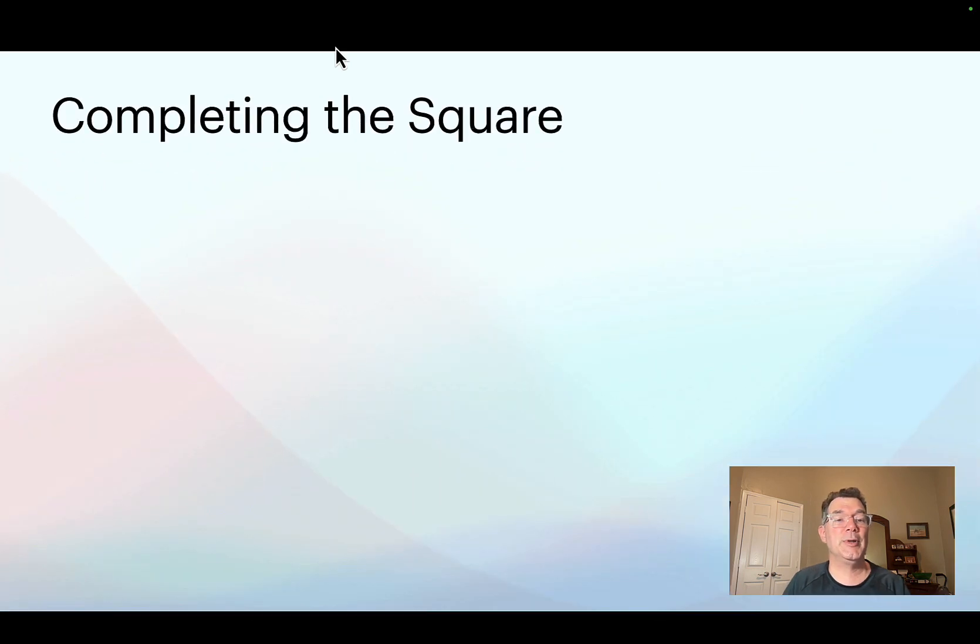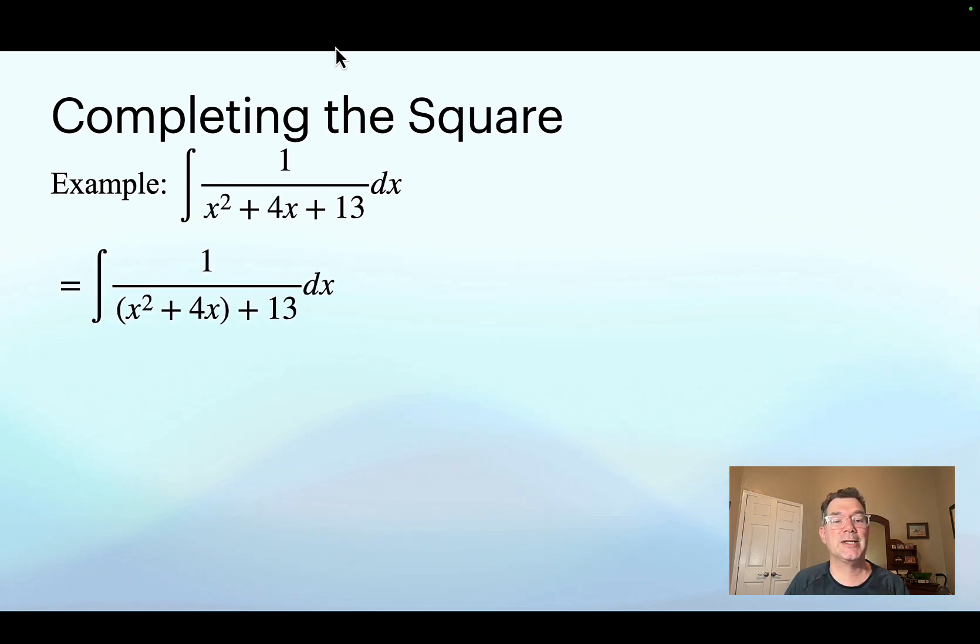So let's do an example of this. Let's say I have 1 over x squared plus 4x plus 13. What I'm going to do is I'm going to put the x squareds and the x's in parentheses and leave any constants outside. So I need to complete the square that is in the parentheses. And to do that, I take half of the number that's by the x and then I square it. So the number by the x is 4. Half of that is 2. Square that and I get 4 again.